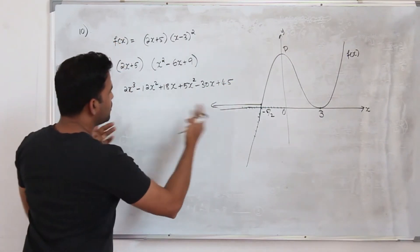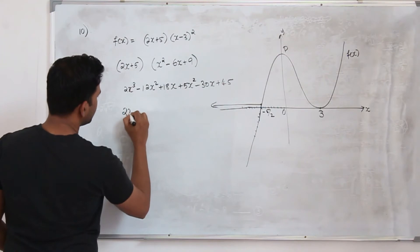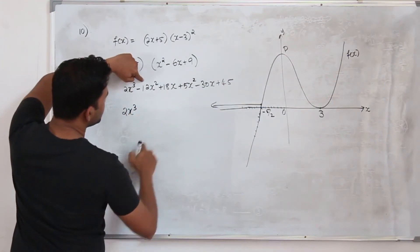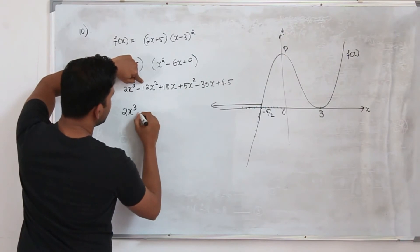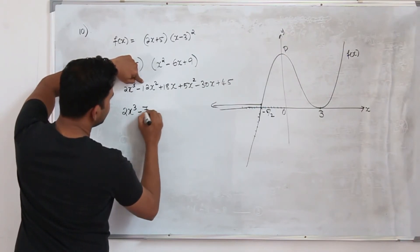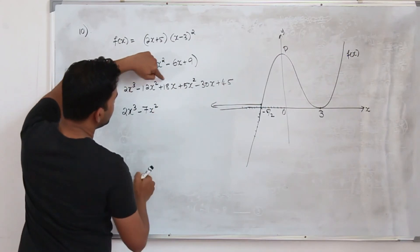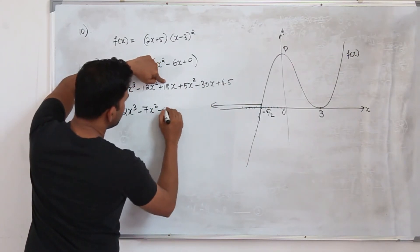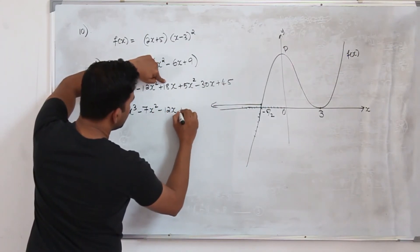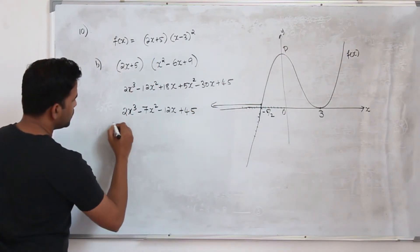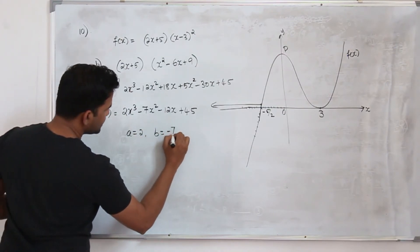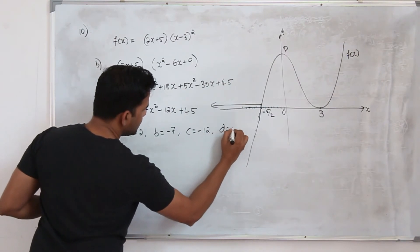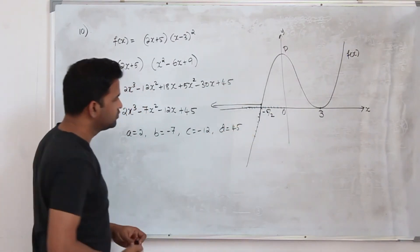Now it's all about simplifying like terms. 2x cube. You have minus 12x square and 5x square. Minus 12 plus 5 is minus 7x square. 18 minus 30 is minus 12x plus 45. So this is our f(x). Your a is 2, b is minus 7, c is minus 12 and d is 45. That's it.